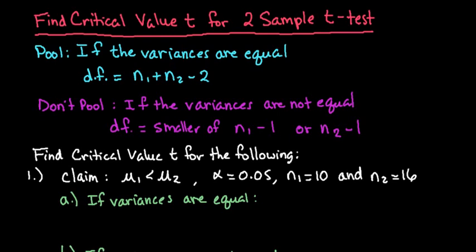When dealing with a two-sample t-test, you always have to ask yourself the question, should I pool or not pool? You only want to pool if the variances are equal to each other. You don't pool if the variances are not equal. It's always safer not to pool, so if you don't know anything about the variances, then you would not pool.